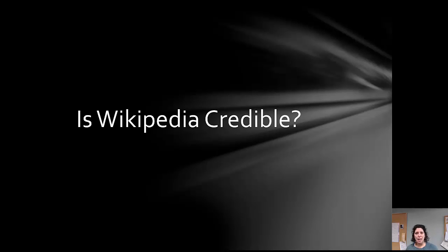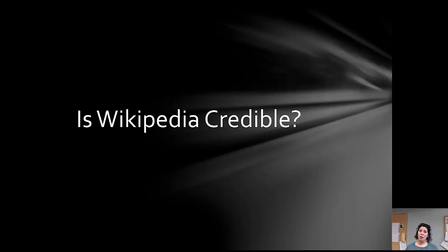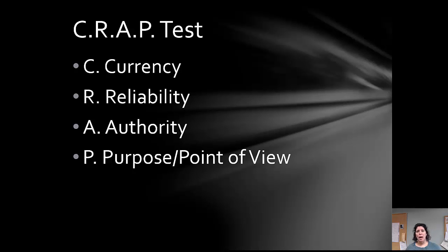Is Wikipedia credible? Again, it depends. Sometimes professors say you can't use it at all. But think about how you're going to use it and how you're going to evaluate what you find there. A lot of people use it to look at other references, and that's a perfectly appropriate use. When I'm working to help students find answers to questions I don't know much about, I first get informed by looking at a Wikipedia page. It has its utility — think about the context in which you're going to use it.